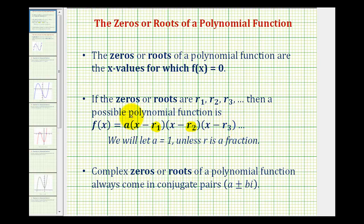Also it's possible to include a constant here which would not affect the zeros of the function. We always let a equal one unless we have fractions in our binomial factors which we want to clear.